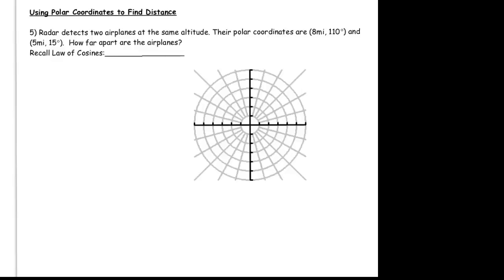Let's first plot these two points in polar form. For 8 miles at 110 degrees, starting at the pole, I'm going to rotate 110 degrees. 90 degrees brings us to the positive y-axis, and each gray section is 15 degrees, so 105 degrees is one section past 90, and 120 is two sections — so 110 is somewhere in between. Walking out 8 units, since the scale only goes to 6, I go two additional units, bringing me to about here.